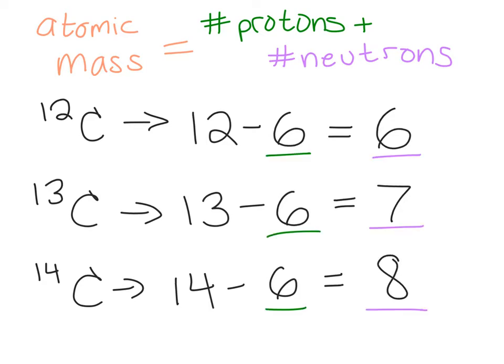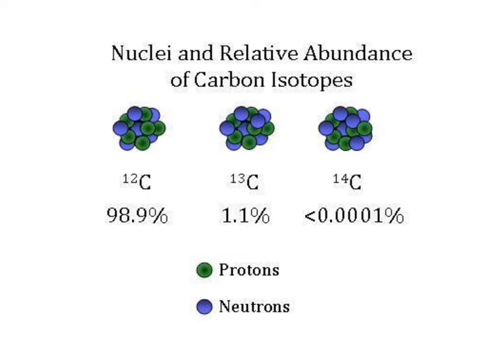There are not equal amounts of each isotope. This image gives an idea of the abundance of each one. Carbon-12 is the most abundant isotope. This explains why the atomic weight of carbon is so close to 12.